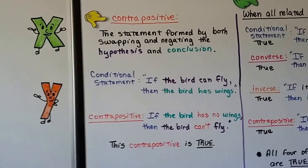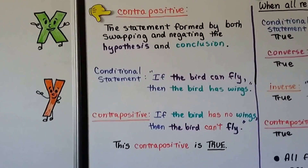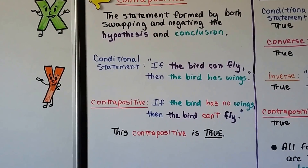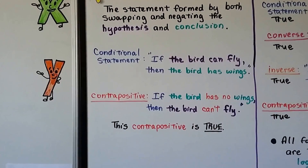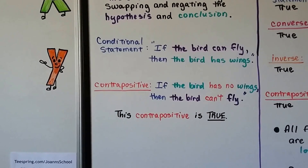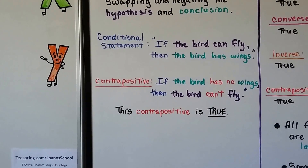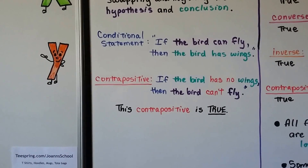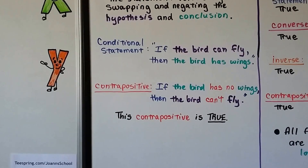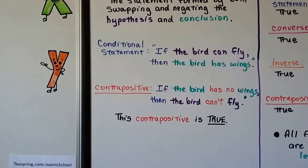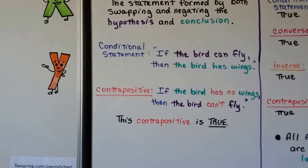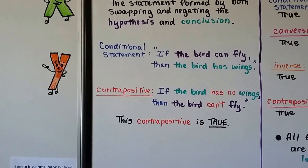Contrapositive is the statement formed by both swapping and negating the hypothesis and conclusion. Our conditional statement — if the bird can fly, then the bird has wings — gives the contrapositive: if the bird has no wings, then the bird can't fly. This contrapositive is true. And if you threw the bird through the air, that's not really flying — it just kind of goes where it was thrown.